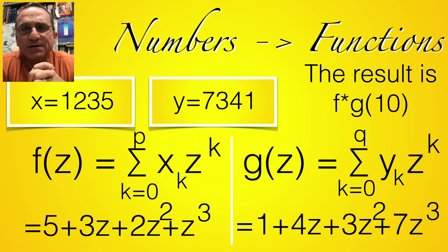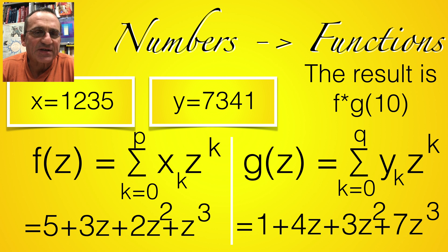The basic idea is to write an integer first as a function, so take the digits as the coefficients of a finite Taylor series, and here f and g represent then this number, and if you evaluate this function at 10 you get the number back. So the result is then just the product of the two functions evaluated at 10. It looks first a bit crazy, functions are much more complicated than numbers, why would we want to do that?